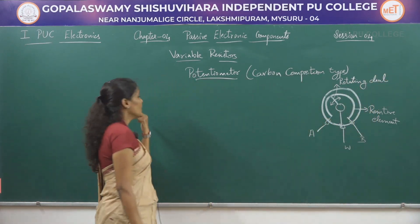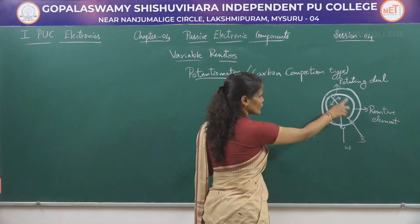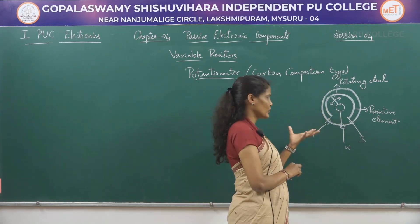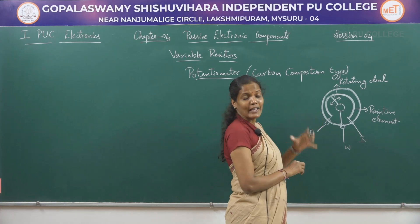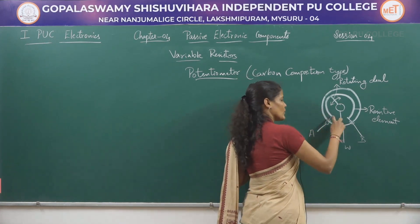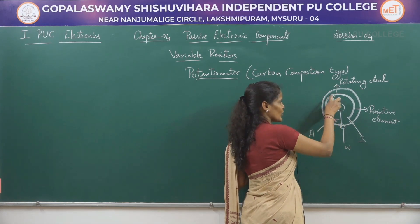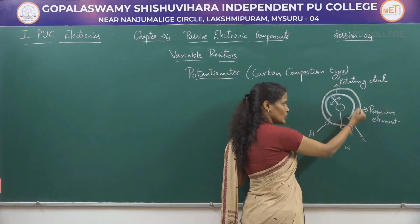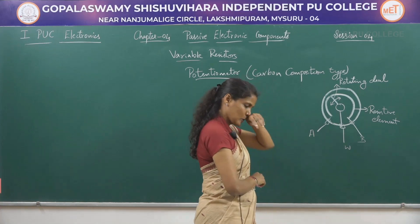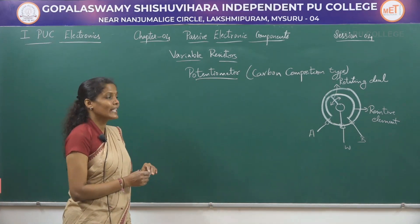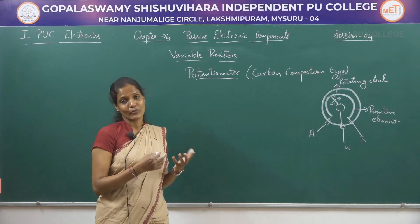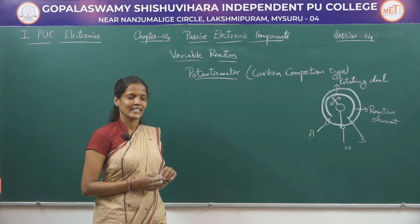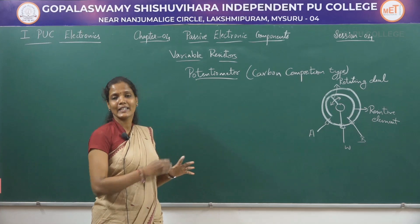This is a schematic diagram of a potentiometer where it contains a disc which is almost three-fourths of a ring. On this disc, carbon particles are deposited, and a moving arm is connected to the shaft. By rotating that moving arm, the value of resistance can be varied from zero to maximum. This is the zero position and this is the maximum position. Since we are using carbon particles, these are called carbon composition type resistors, and the variation can be linear or logarithmic.